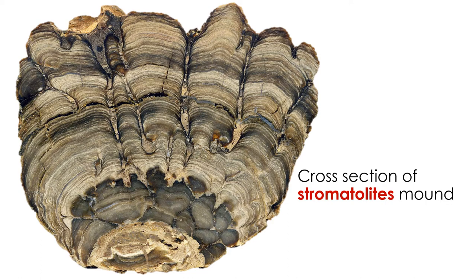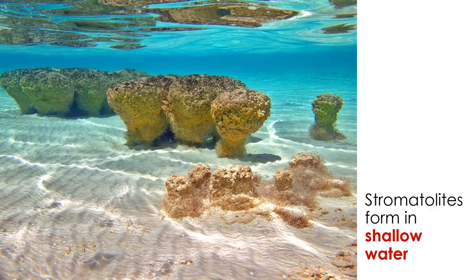If you cut a stromatolite open and look at it in cross section, you will see that the mound consists of layers called laminae. These laminae are built up into columns of sediment. The mounds form in shallow water. The inside of the mound is rock and sediment, but its exterior surface is covered by thin layers of microorganisms called microbial mats or microbial films.